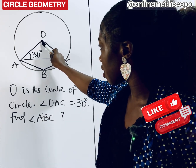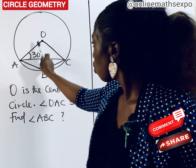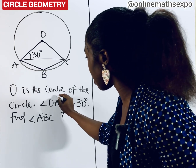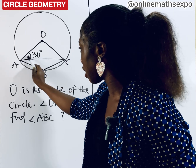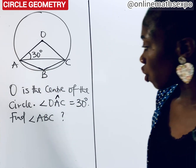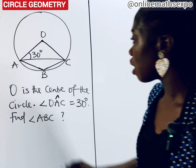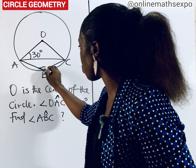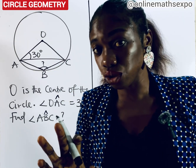This is your O — this is the center. We are told angle OAC. When you see this notation, the angle is on the second letter, so the angle is formed at A. That angle is 30 degrees. We are also asked to find angle ABC, which means the angle at B. So this is what we are looking for.